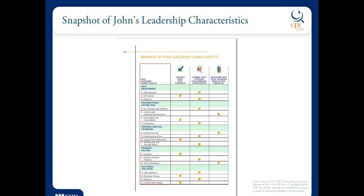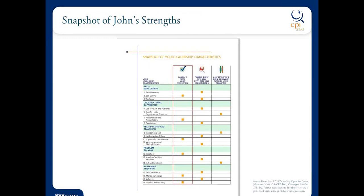We think these are leadership characteristics that are well known, kind of universal, and important. They are also leadership characteristics that we think the CPI has a lot to say about. The coaching report for leaders pulled out six clear strengths for John: self-control, responsibility, accountability, capacity for collaboration, and so on, all the way down to some comfort with visibility. So comparing John's results to a large sample of other on-track managers and executives yielded these six likely strengths.